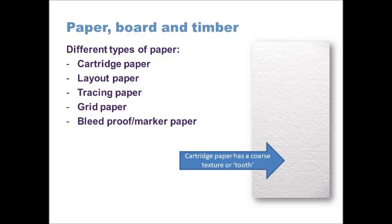The final type of paper is bleed proof or marker paper. It's useful to understand what bleeding means first: bleeding refers to when liquid ink — from a watercolor marker, alcohol-based marker, or marker pen — is drawn into normal paper through osmosis, where liquid travels from a high concentration to a low concentration. Bleed proof or marker pad paper is treated so that the ink will not spread across the surface. You've probably noticed on normal copier or cartridge paper that ink starts to move and bleed across the page; marker paper prevents that.